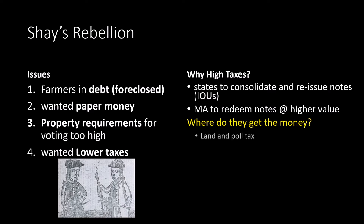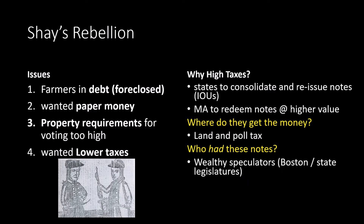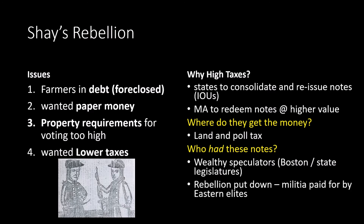But where did the money to redeem the notes at high value come from? Taxes — a land tax and a poll tax. By the time the war was over, the people who actually held most of these notes were wealthy speculators. When veterans were desperate for cash, speculators had bought the notes for nearly nothing. Most of these speculators were in eastern Massachusetts and Boston — and many were actually state legislators. So these legislators voted to redeem notes at the highest value while holding most of the notes themselves, funded by taxes on everyone. Daniel Shays and his followers saw this as the wealthy taking from the poor.